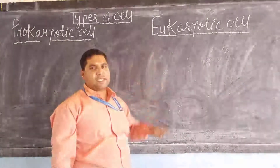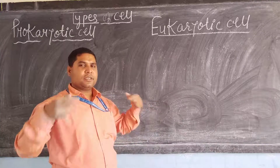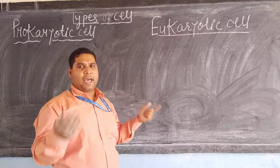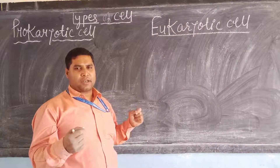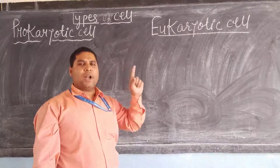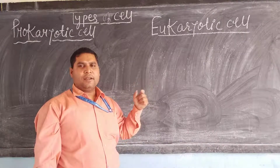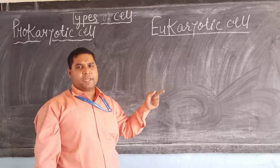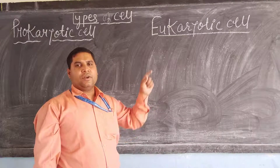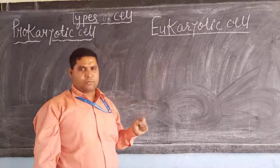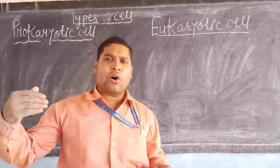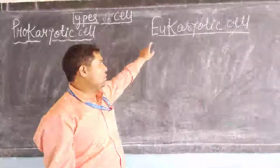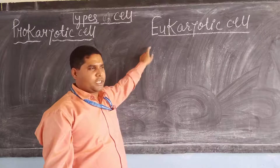Whereas eukaryotic cells are well developed cells. Human cells, plant cells, and animal cells are well developed cells which contain a well developed nucleus, several lengths or several folds of DNA, large ribosomes, and almost all organelles are present. These are known as eukaryotic cells.